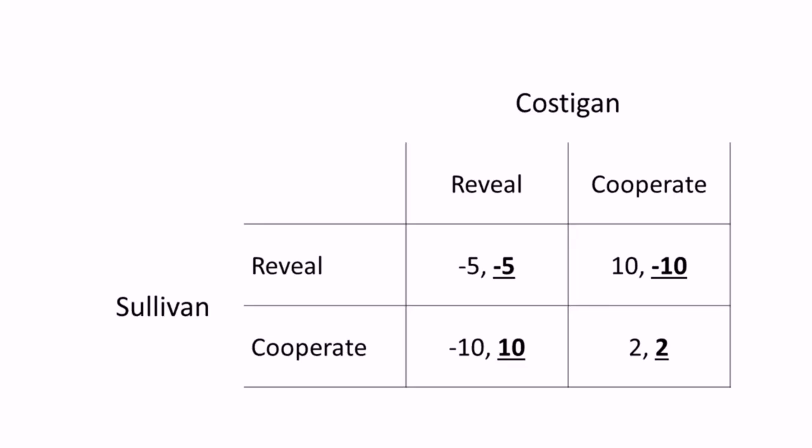If Costigan chooses to cooperate and Sullivan decides to reveal his identity, Costigan will receive a payoff of negative 10. Since both players do not know what the other is going to do, they will end up going with their dominant strategy, which is to reveal the other's identity, chasing their best payoff of 10.